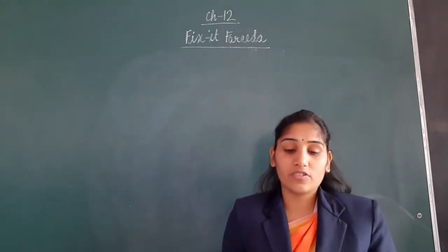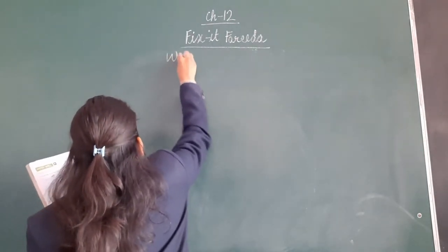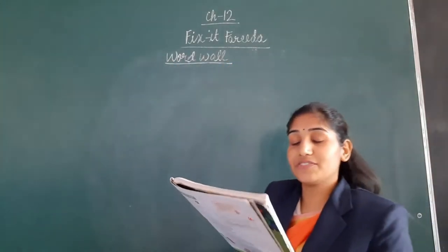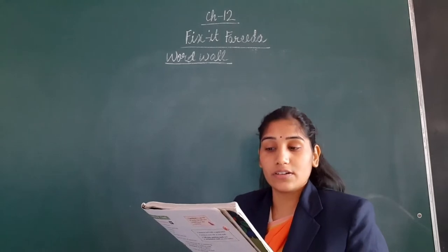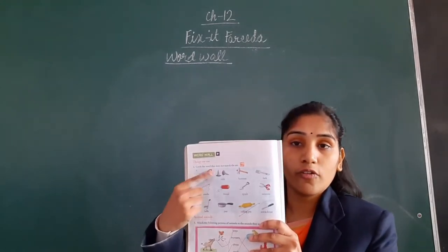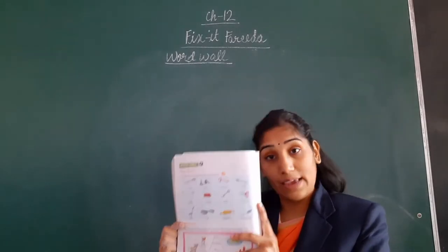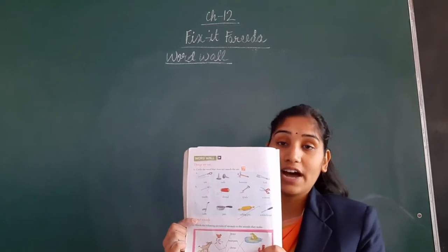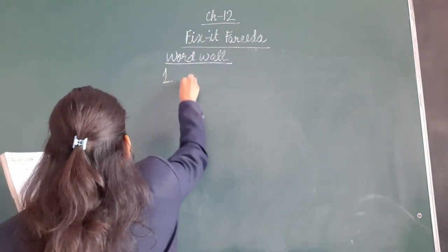So turn to page number 130. We will begin with the word wall. So children, here we have some things that we use. Let me read out the question: Circle the word that does not match the set. In each part we have total 4 pictures. Out of these 4 pictures, 3 pictures belong to the same category but the 4th one is different. So we have to find out the one that does not belong to the set. We will begin with question number 1, part A.